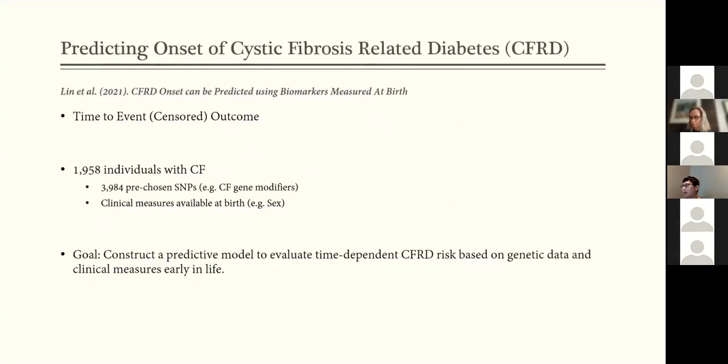So I just want to quickly talk about a study with cystic fibrosis-related diabetes or CFRD. So in short, we have a time-to-event outcome that shows the onset of this disease, close to 2,200 individuals and about 4,000 pre-chosen variants. The goal here is to construct a model to evaluate this time-dependent risk based on the genetic and clinical measures early in life.